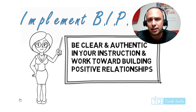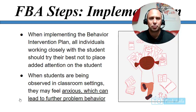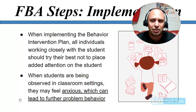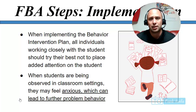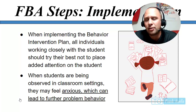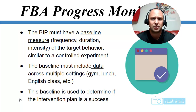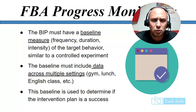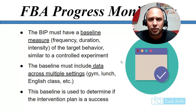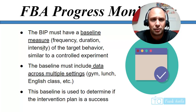Step six: implement the plan. All individuals working closely with the student should try not to place added attention on the student — don't make it obvious. Students being observed in classroom settings may feel anxious, which can lead to more problems. You never want to embarrass a student or be the cause of a new problem. Monitor the implementation: is the behavior increasing or decreasing? Everything begins and ends with assessment. The BIP must have a baseline measure of frequency, duration, and intensity of the target behavior across multiple settings, so you can determine if the intervention plan is a success.